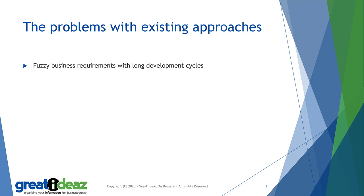It involves more cost, it involves more effort, it involves more risk. Ideally, we want the shortest development cycle possible. In an ideal world, a business user will say what they want, we will build it, immediately get feedback and iterate around that. So the shorter the development cycle, the better.